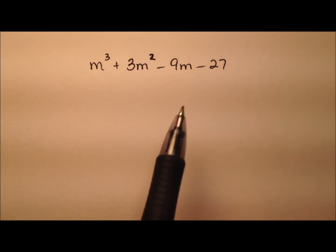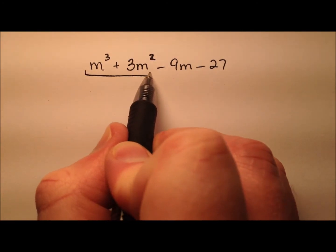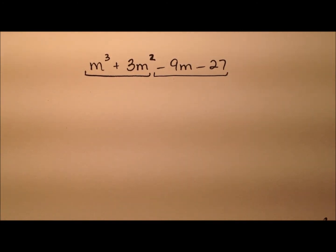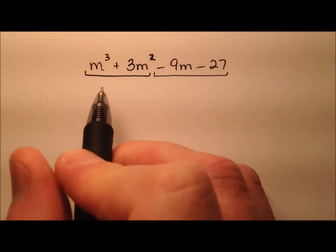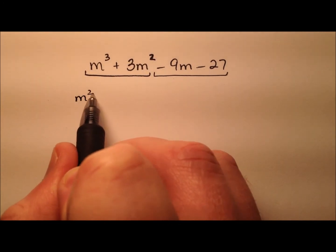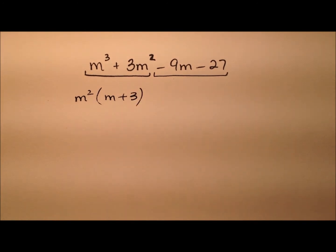So the next thing to notice is that there are four terms, so let's go ahead and try factor by grouping first. So out of the first pair, we can factor an m squared out, and what's left is m plus 3.